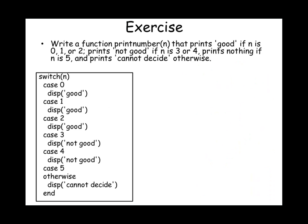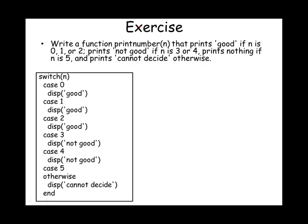In this exercise, we are asked to write a function called 'print_number' that prints 'good' if the input is 0, 1, or 2; prints nothing if it is 3 or 5; and prints 'cannot decide' otherwise. Using a switch statement is both faster and easier to read. We switch on the value: case {0,1,2}: display 'good'; case {3,5}: the action list is empty so nothing is printed; otherwise: display 'cannot decide'.